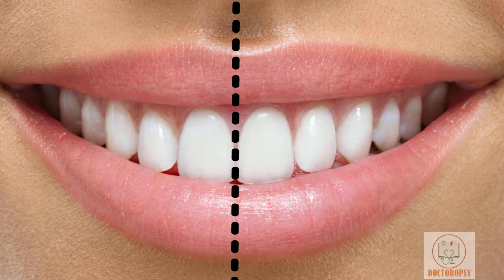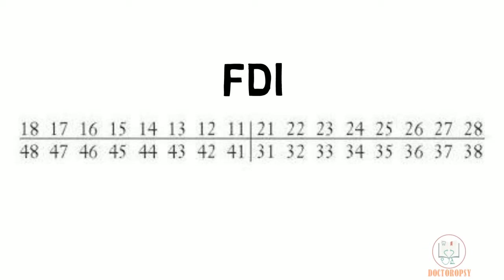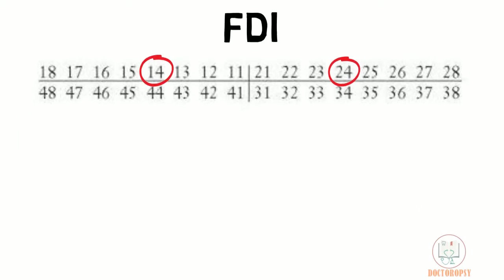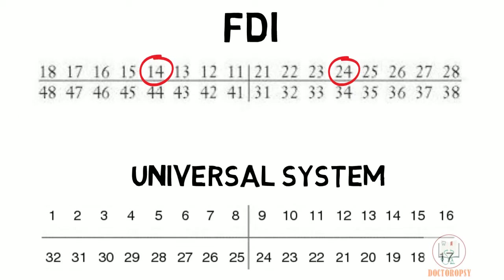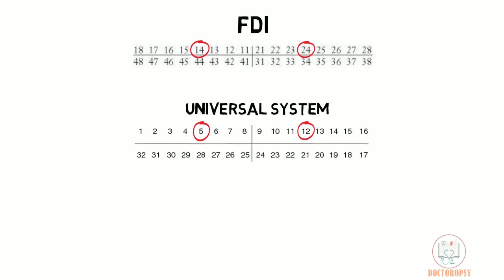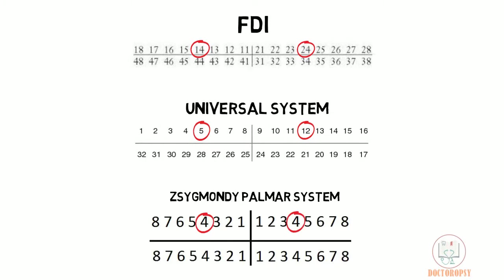Maxillary first premolar is the fourth tooth from the midline. Its tooth number in the FDI system is 14 and 24. In the universal system it is 5 and 12, and in the Zsigmondy-Palmer system the tooth number is 4 with appropriate brackets.